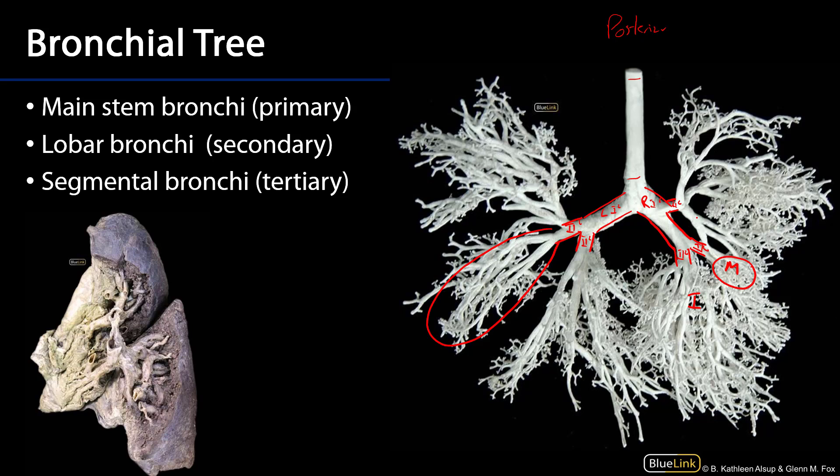The tertiary bronchi we can see coming off the secondary bronchi. Those are going to serve the bronchopulmonary segments, which is why they're sometimes known as segmental bronchi. Thank you very much for your time.